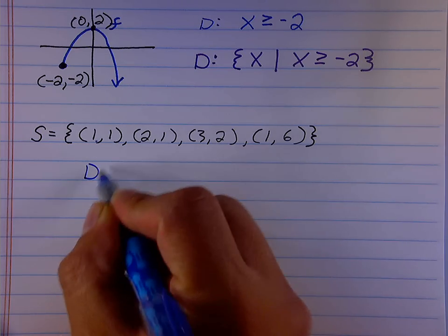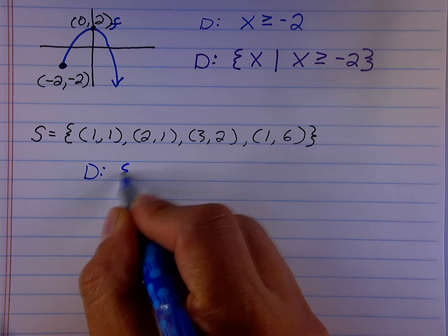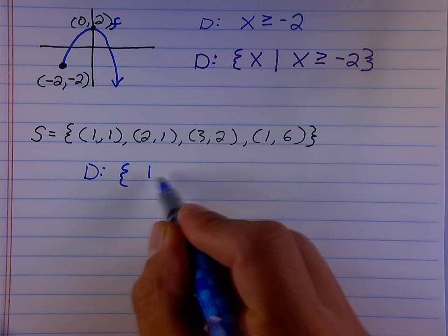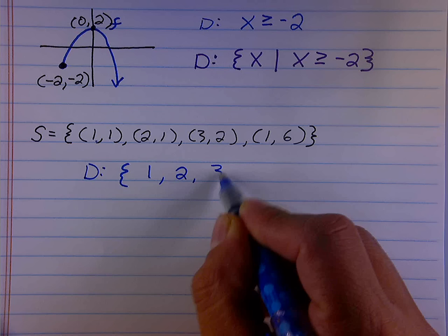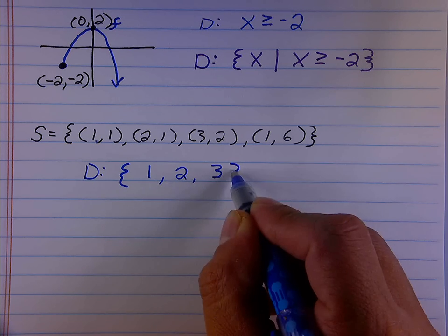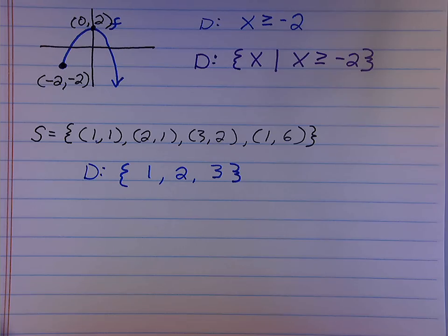So the domain of this set would be the set of x values 1, 2, and 3. There's no reason to list 1 again. That's just redundant. So these are all of the possible input values for this set.